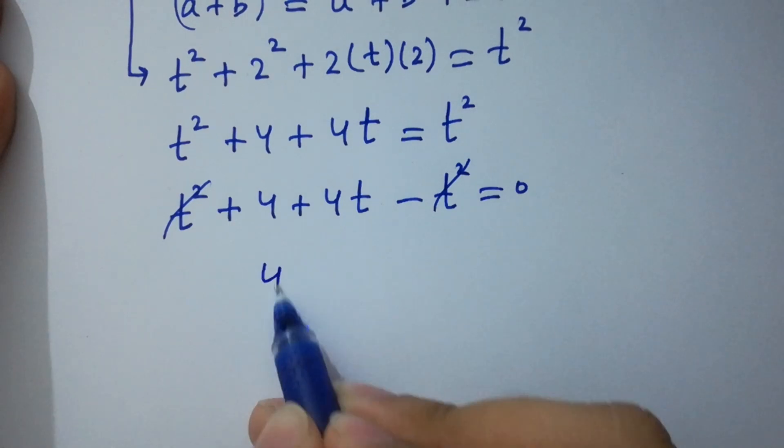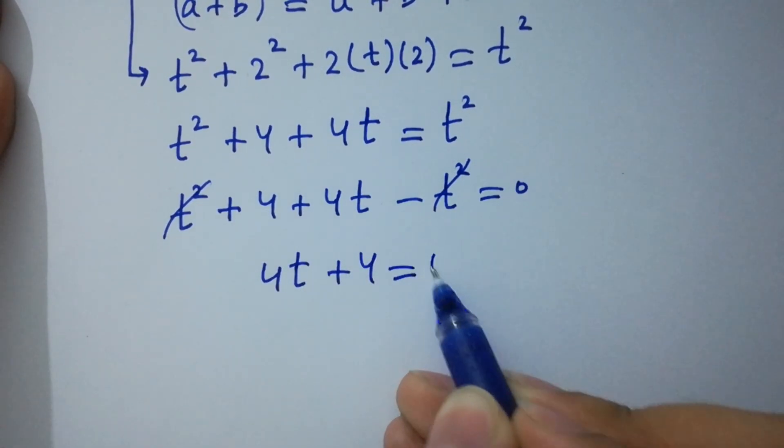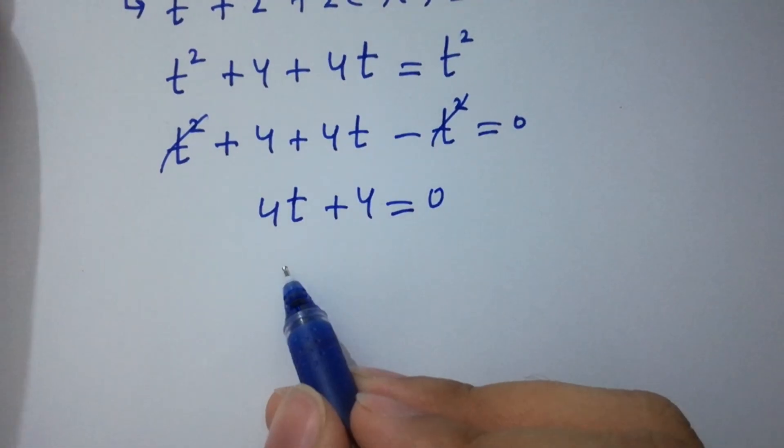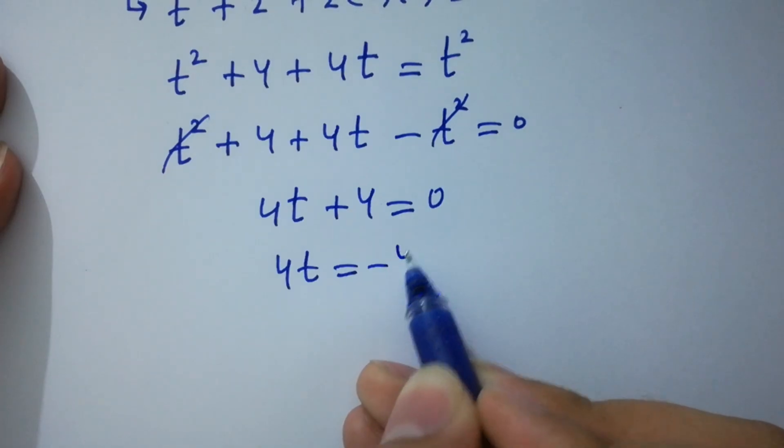We get 4t plus 4 equal to 0. 4t equal to minus 4.